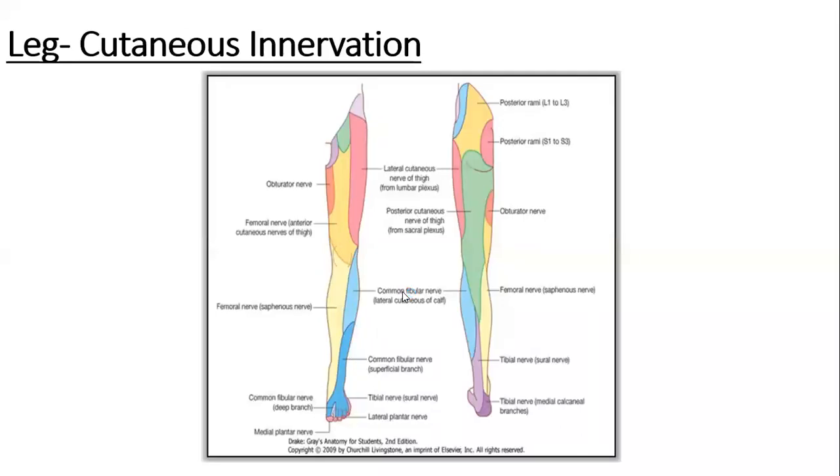Second important nerve in the cutaneous innervation is the superficial peroneal nerve. It arises as a terminal branch of common peroneal nerve and its area of supply includes lower anterolateral part of the leg.